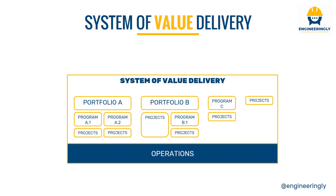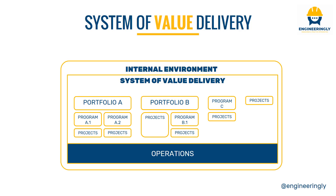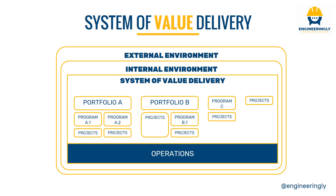Along with the system of value delivery, we have operations. Whatever we create as deliverables, we deliver them to operations for further use and for creating benefits from those deliverables. Bear in mind that the decisions inside the system of value delivery are bound by the internal environment of the organization itself, or by the external environment — which could be the government or other enterprise environmental factors — over which the system of value delivery has no leverage or ability to change. So what projects and portfolios inside the system of value delivery have to do is obey the rules and regulations mandated by the external environment.